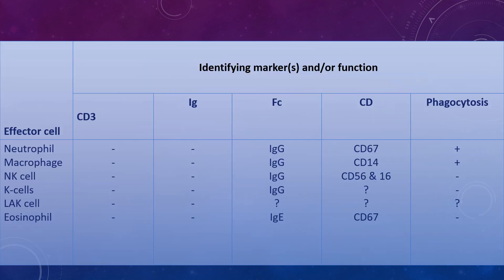The different types of effector cells include neutrophils, macrophages, NK cells, K cells, LAK cells, and eosinophils, each with different identifying markers and functions. Eosinophils are associated with IgE and CD67. Neutrophils, macrophages, NK cells, and K cells are all associated with IgG. Their respective CD markers are CD66 for neutrophils, CD14 for macrophages, and CD56 and CD16 for NK cells.